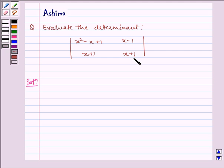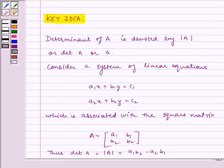Before writing the solution, let us see the key idea. The determinant of A is denoted by |A| or det A or Δ. Consider a system of linear equations: